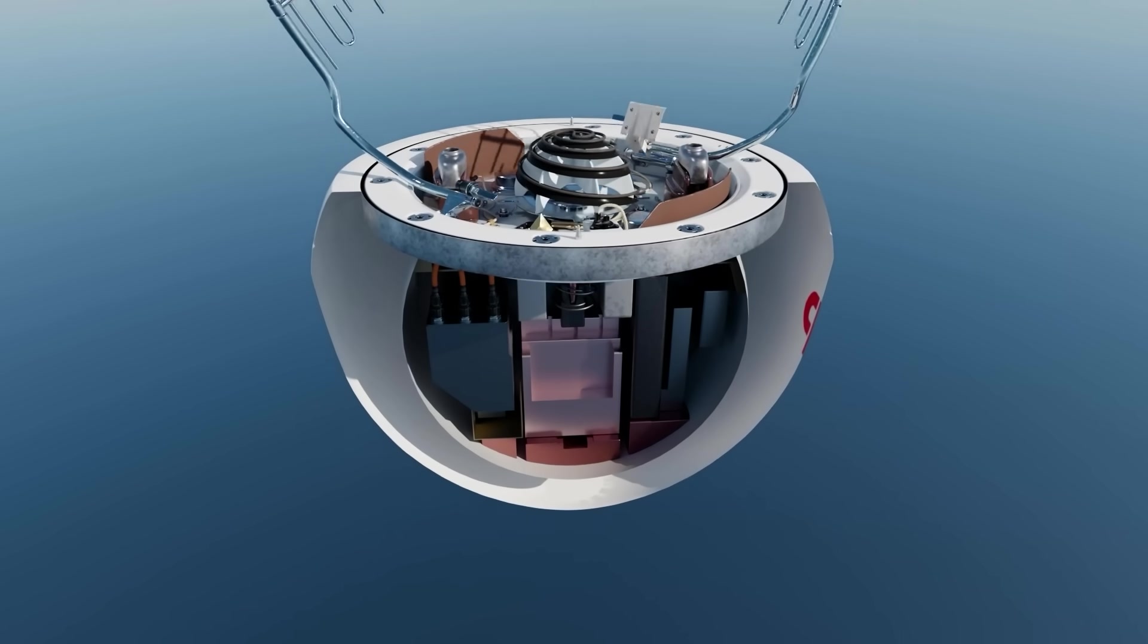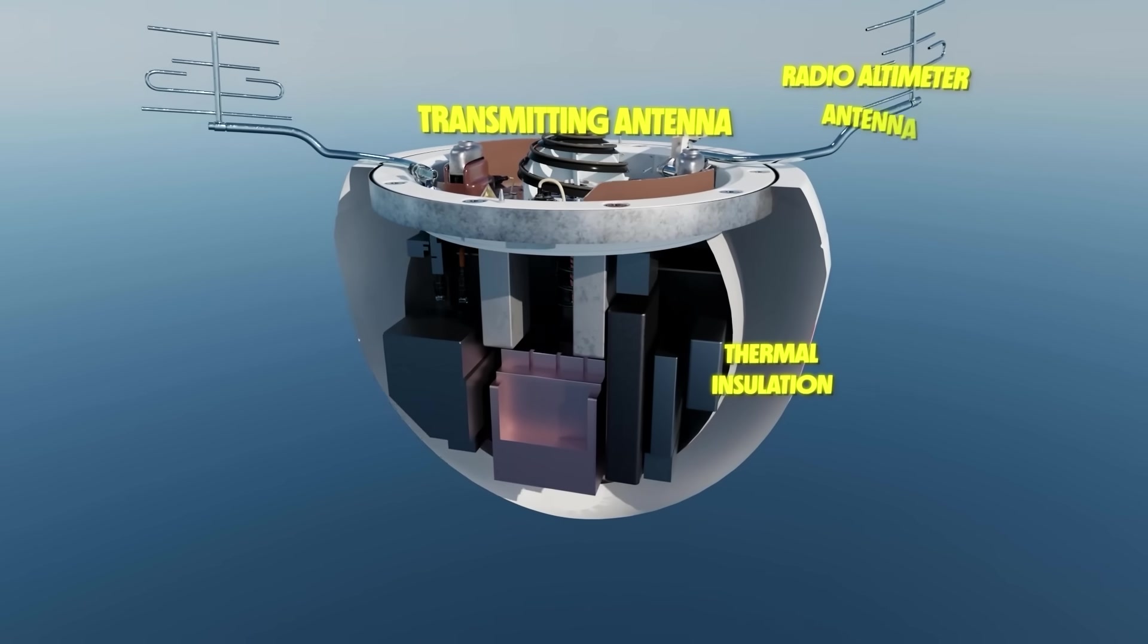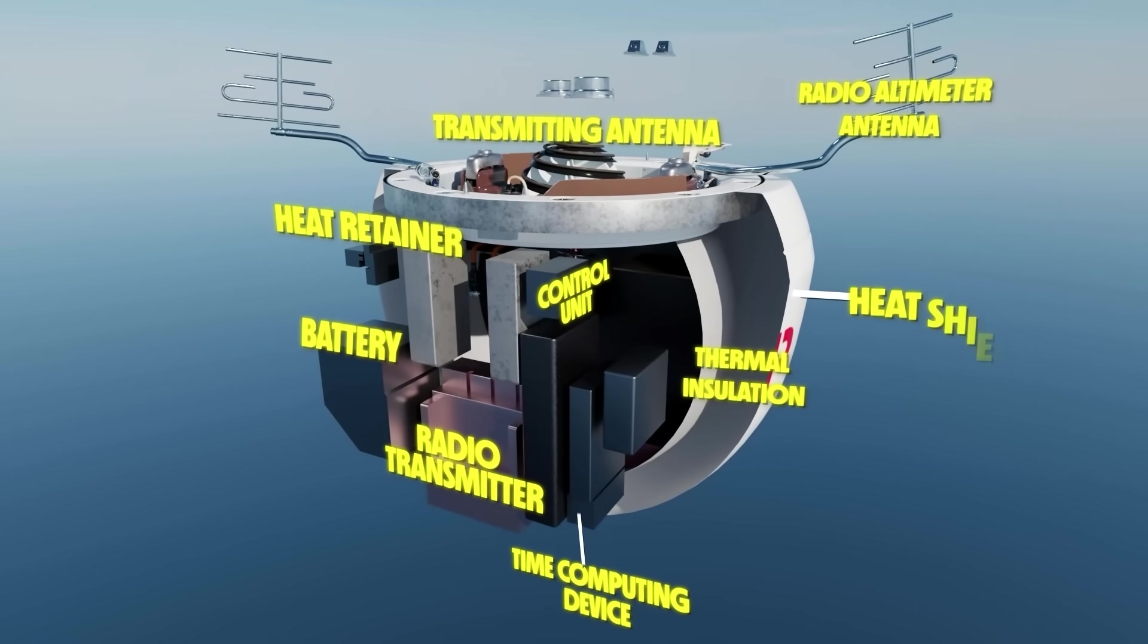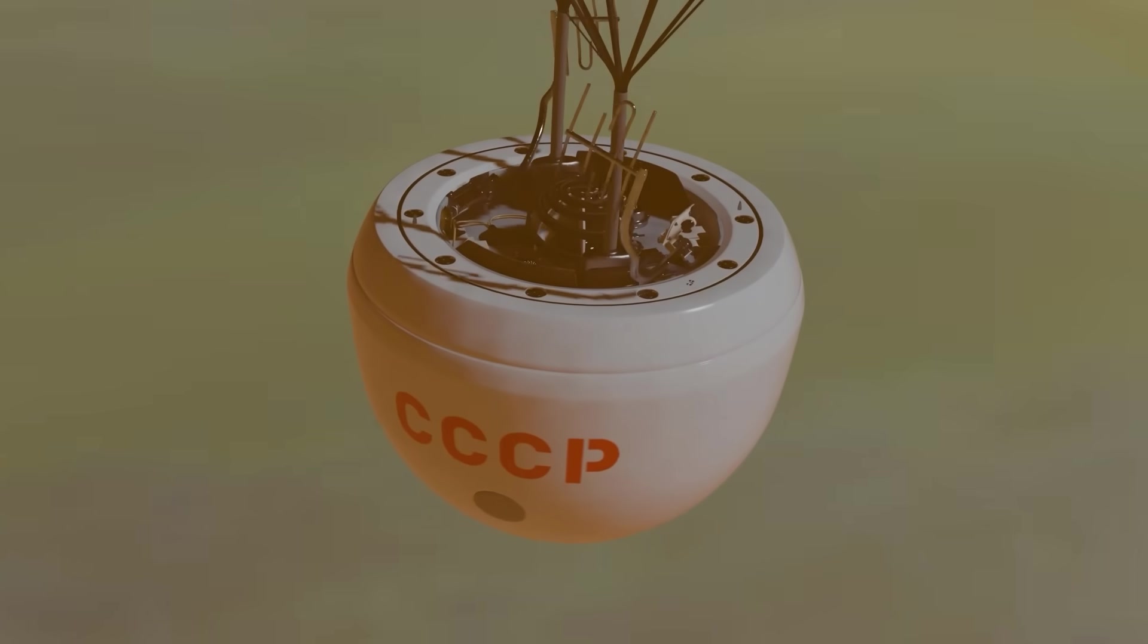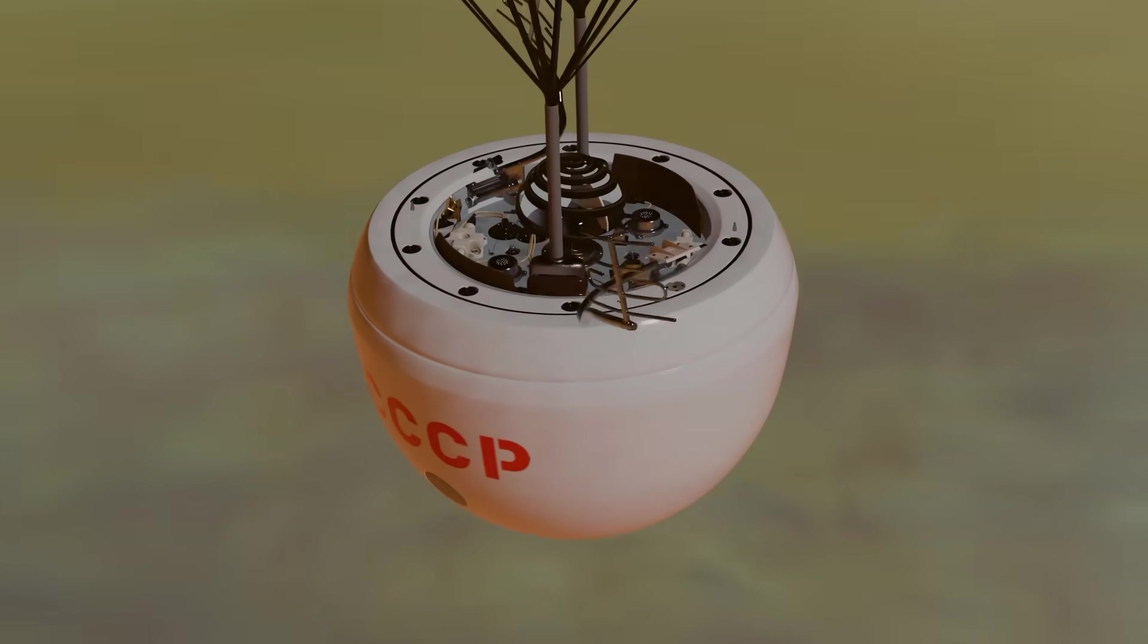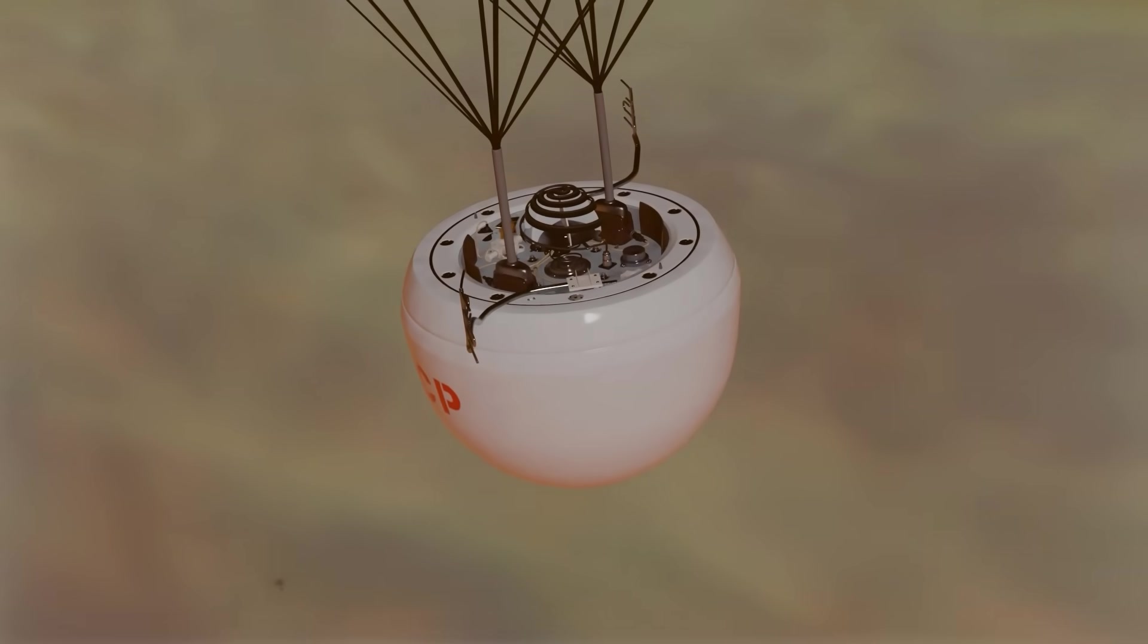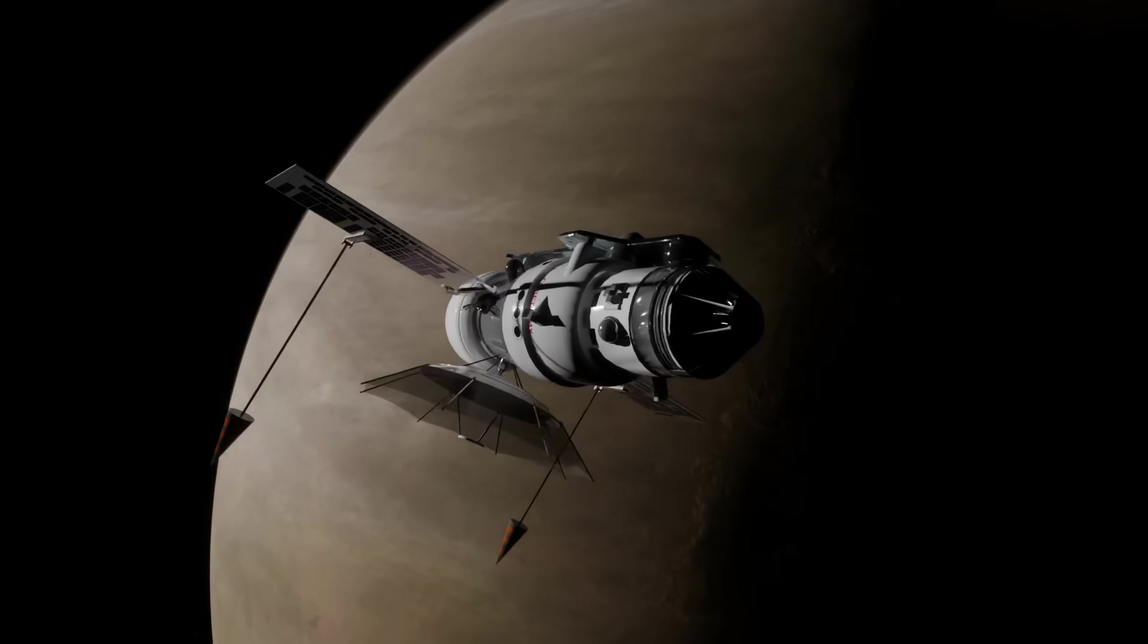These new probes are equipped with a variety of instruments like a barometer, a radar altimeter, gas analyzers, thermometers, and a detachable pod that would serve as a descent module. The idea was that the descent module would parachute down through the Venetian atmosphere and take readings about the composition, temperature, and pressure all the way down to the surface. In reality, things got a little complicated.